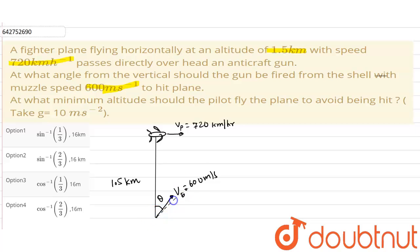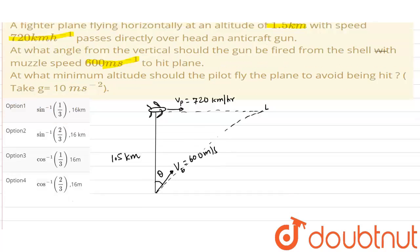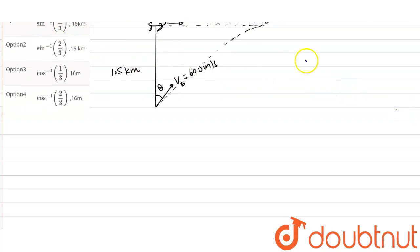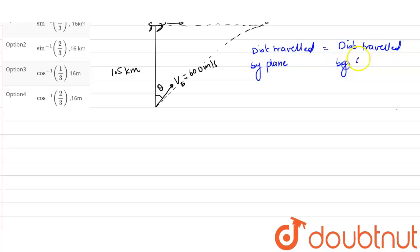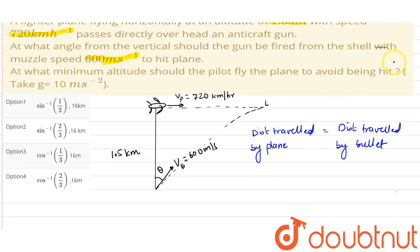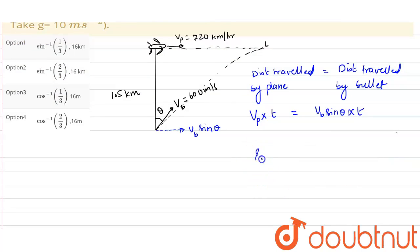After time t, the bullet hits the plane at point L. To hit the plane, the distance traveled by the bullet must equal the distance traveled by the plane in the same time period. The distance traveled by the plane is velocity of plane multiplied by time t, which equals the horizontal component of the bullet's velocity: vb sin θ multiplied by t.